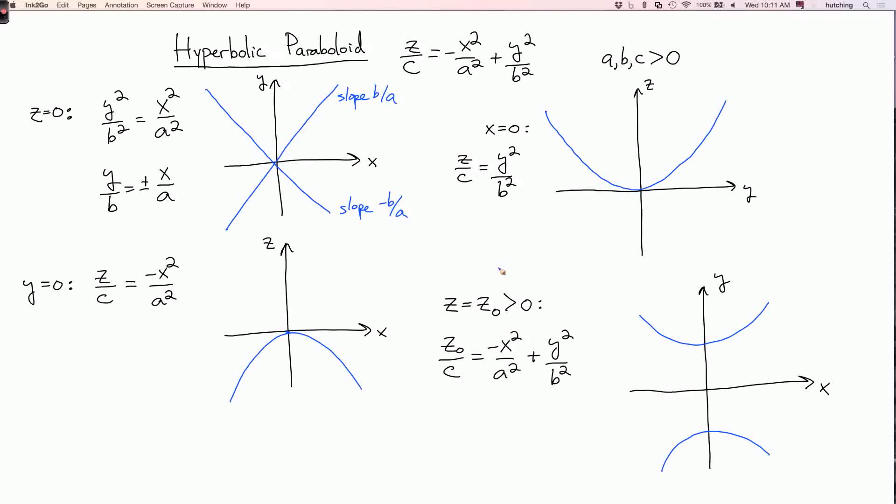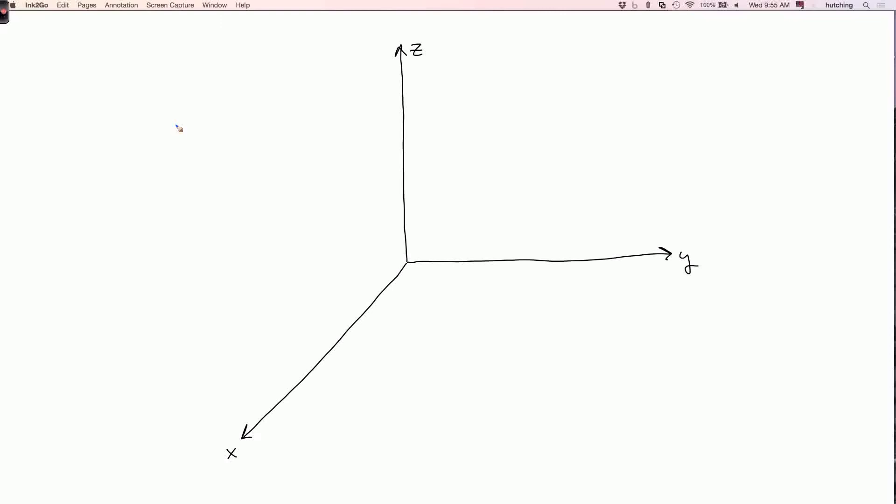Okay, so let's put all of this information together to sketch the three-dimensional surface. So remember that the intersection with the yz plane is a right-side-up parabola. So let's draw that in here. And the intersection with the xz plane is an upside-down parabola. So let's draw that one.